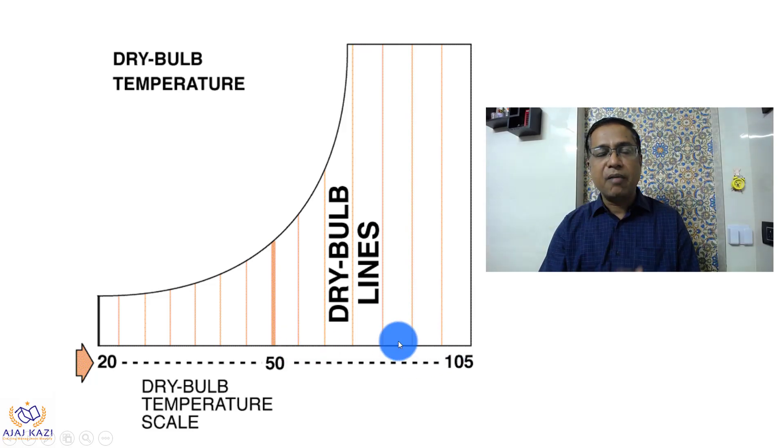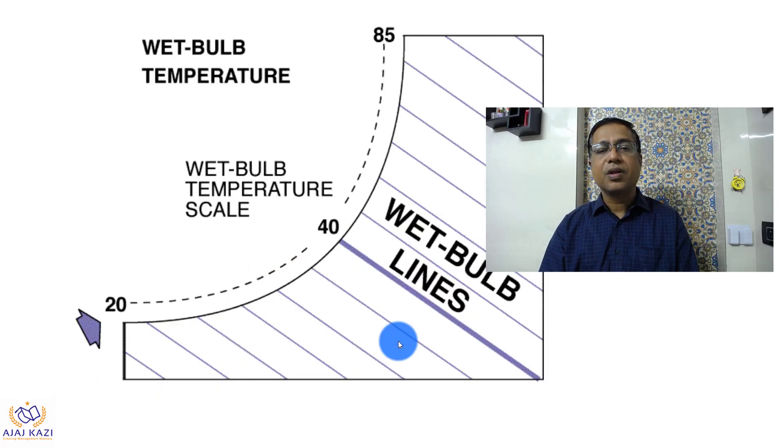Similarly, the angular lines which hit the curve over here - this is the wet bulb temperature scale. These are like 20, 40, 85. These are the wet bulb temperatures. These lines hit the curve over here. So these are the wet bulb lines, the wet bulb temperature scale.